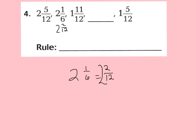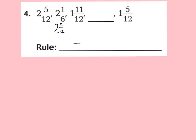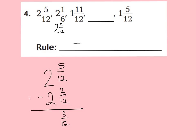Now we can figure out what's happening — is my rule increasing or decreasing? I'm starting with 2 and 5 twelfths, then it goes to 2 and 2 twelfths, then 1 and 11 twelfths. So right away I know my rule is a subtraction rule because my numbers are decreasing. Let's determine what exactly we're subtracting: 2 and 5 twelfths minus 2 and 2 twelfths. We always subtract numerators only — 5 minus 2 is 3, keep denominator 12, and 2 minus 2 is 0. So I will be subtracting 3 twelfths.